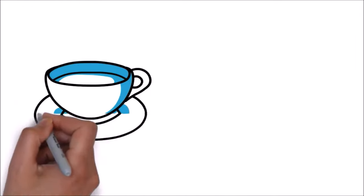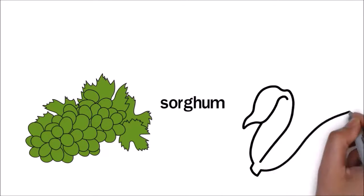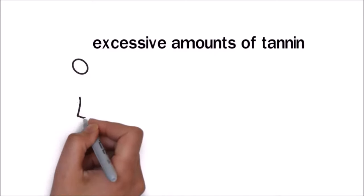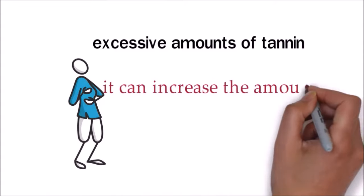Not just in tea or coffee, tannin is also found in grapes, sorghum, and corn. In addition to this, excessive amounts of tannin in your body can cause digestive issues, as it can increase the amount of acid in your stomach.